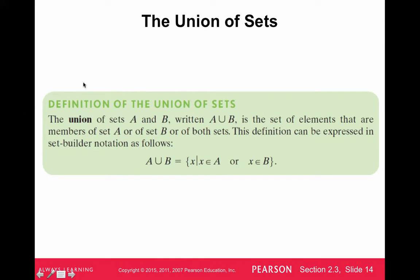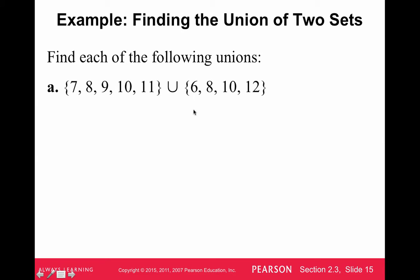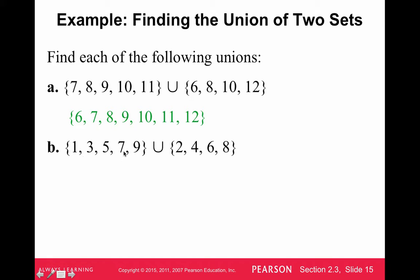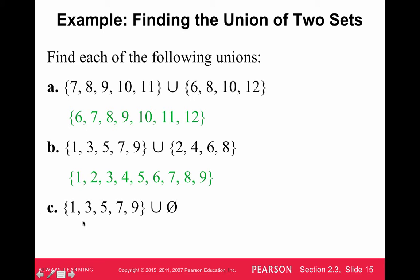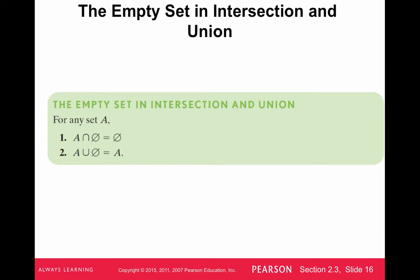The union of sets A and B, written A ∪ B, is the set of elements that are either in A or in B, or in both. For example, the union of {7, 8, 9, 10, 11} and {6, 8, 10, 12} lists each element without repeating — so we don't list 8 and 10 twice. The union of {1, 3, 5, 7, 9} and {2, 4, 6, 8} is simply {1, 2, 3, 4, 5, 6, 7, 8, 9}. The union of anything with the empty set is just the set itself. Intersecting with the empty set gives the empty set; unioning with the empty set gives the set back.